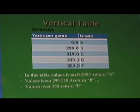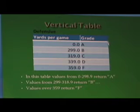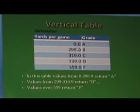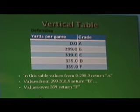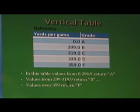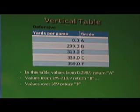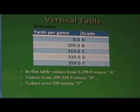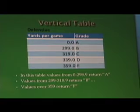In our example, for the VLOOKUP, we used a vertical table. Make sure you start with 0 as your first value, because if you don't, your value returned will be wrong. Values 0 to 298.9 return A, values from 299 to 318.9 return B, and values over 359 return F. The table also must be in ascending order.